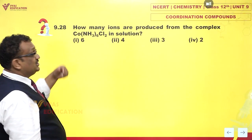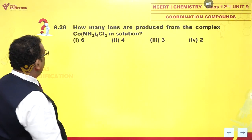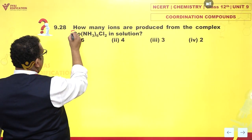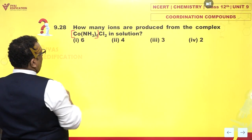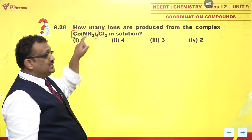How many ions are produced by the complex Co(NH3)6Cl2 in solution? Now please understand that this complex is actually like this because coordination number of cobalt is 6.